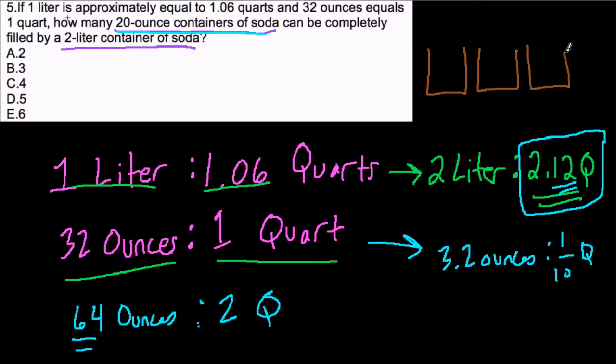So three containers will be filled. One, two, three. That's 20, 40, 60 ounces of liquid. We have 64 ounces plus a tenth of a quart.